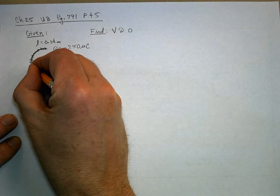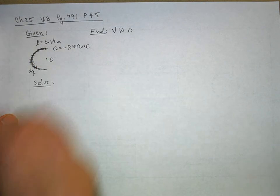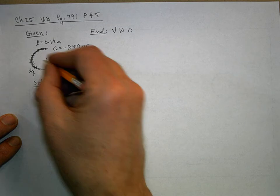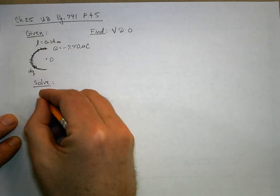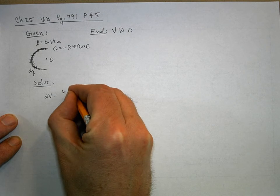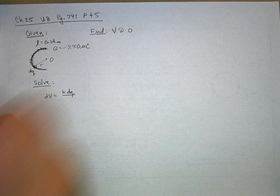If I chose a little arbitrary chunk of this and call that dQ, what I would do is say the voltage at this point dV is equal to K dQ over R.